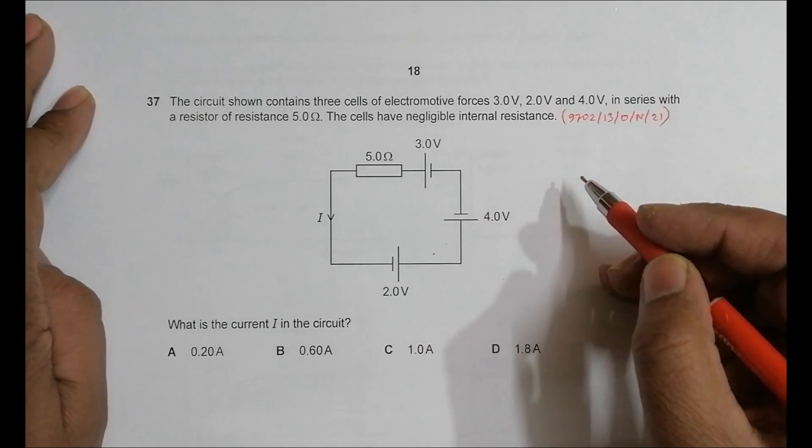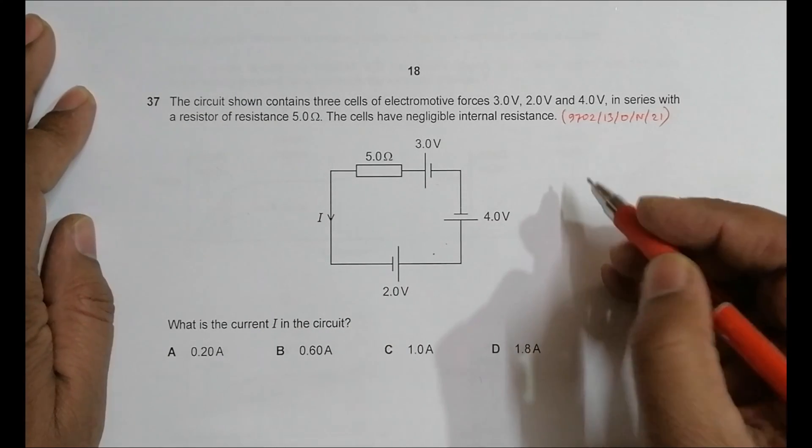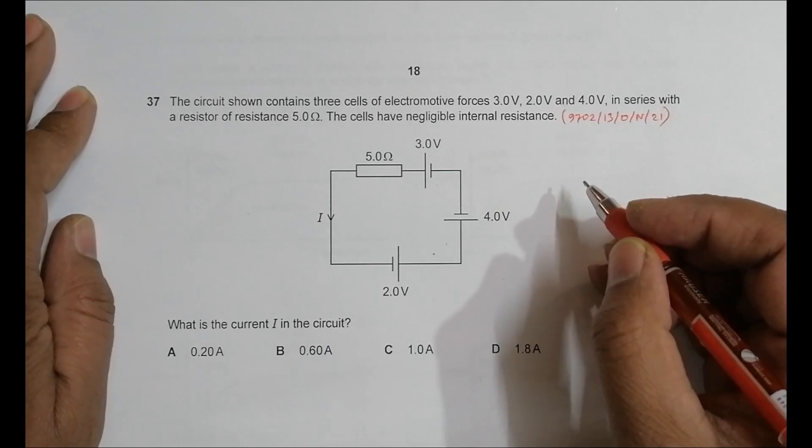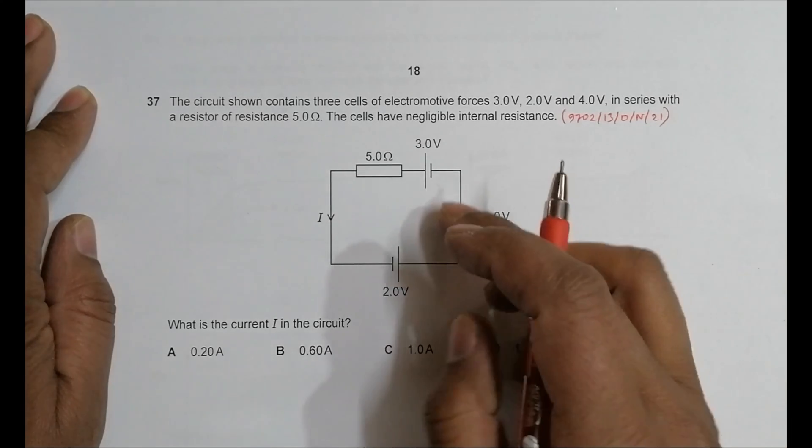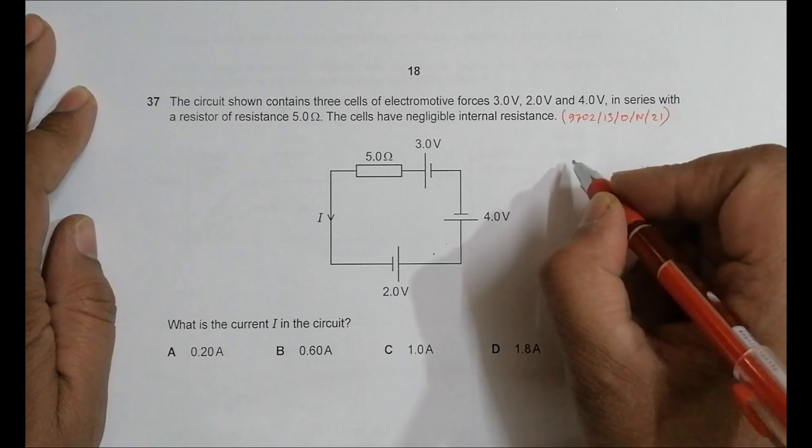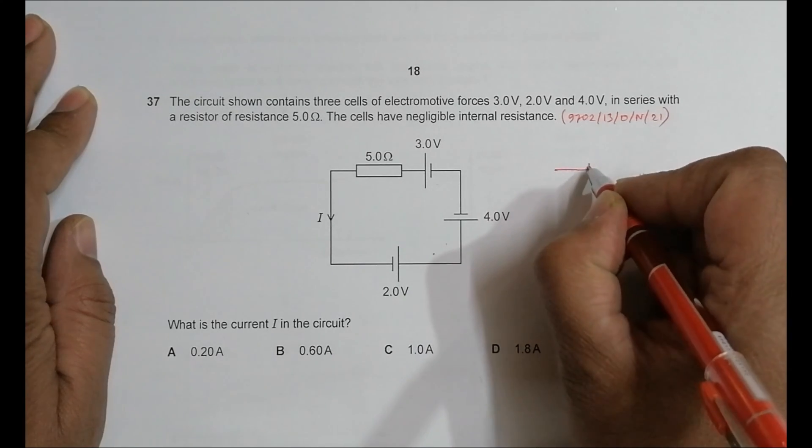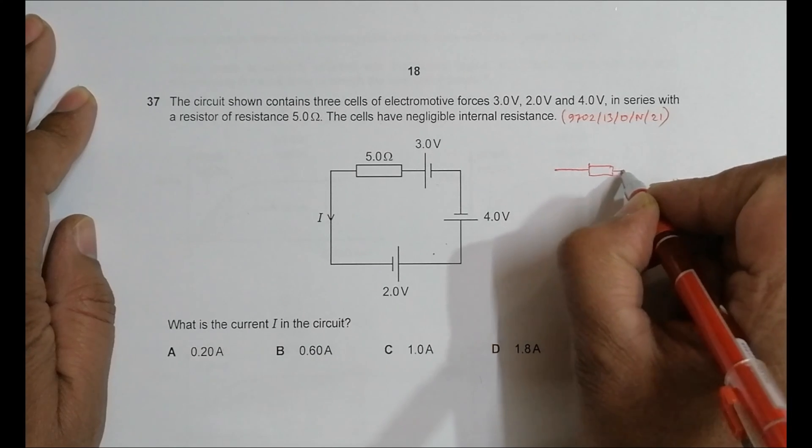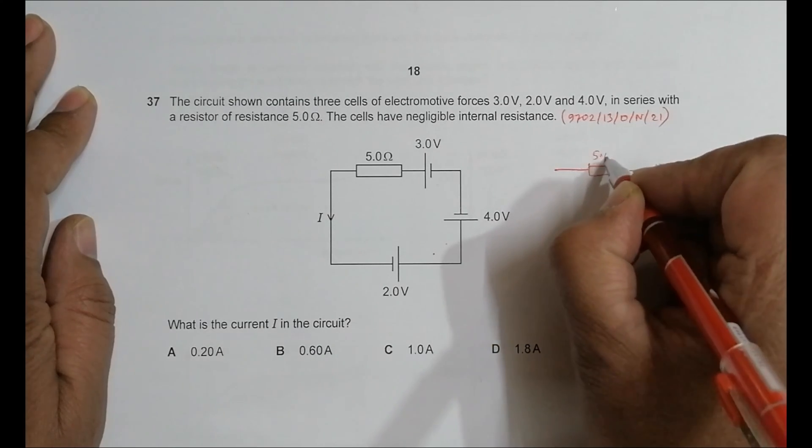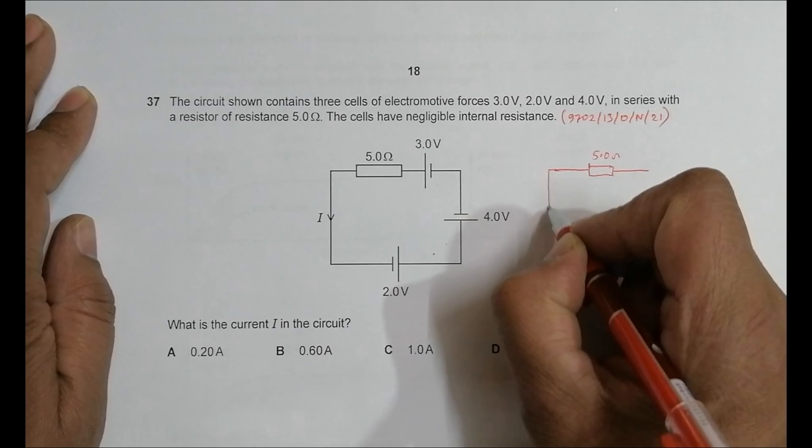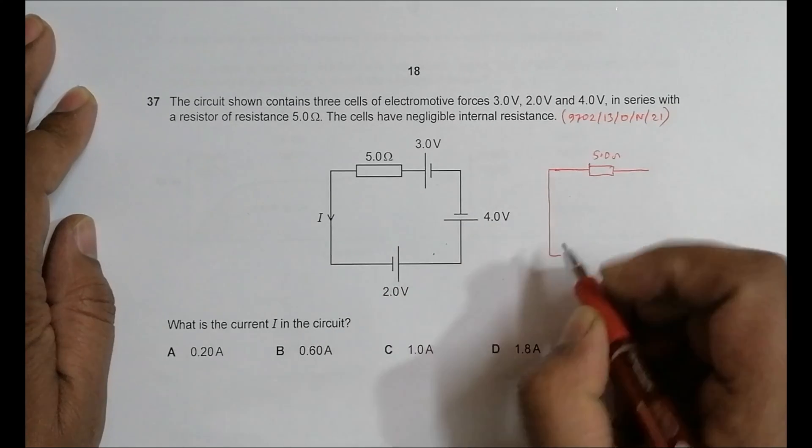In order to discuss this, we must first redraw the circuit. Let's redraw this thing. So when I do that, this is the resistor of 5 ohms here, so it is a 5.0 ohm resistor.